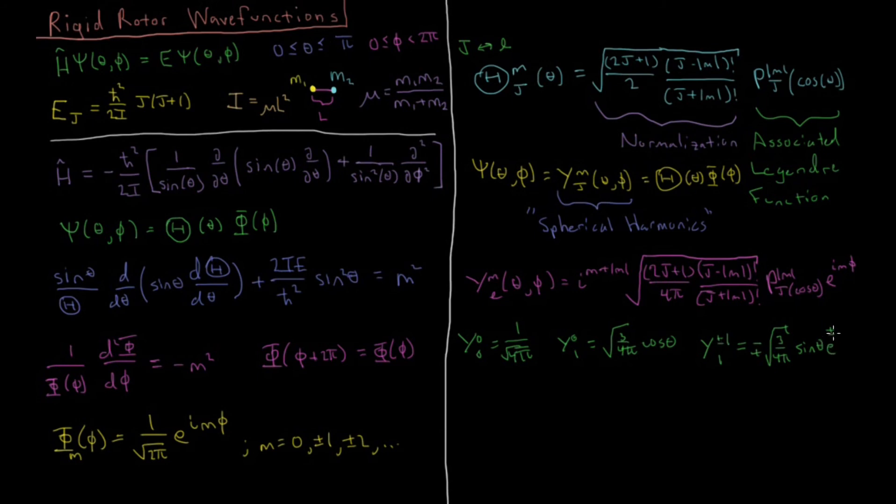Then Y of 2, 0 becomes square root of 5 over 16 pi, and then 3 cosine squared theta minus 1. So the Legendre polynomial for p of 2, 0 is 3 x squared minus 1, so we get 3 cosine squared minus 1.